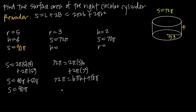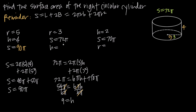Subtracting 18π from both sides gives 54π equals 6πh. Dividing both sides by 6π, the 6π cancels and the π's cancel, leaving 54 divided by 6 equals 9, so h equals 9. Therefore, if the radius is 3 and the surface area is 72π, the height must equal 9 units.